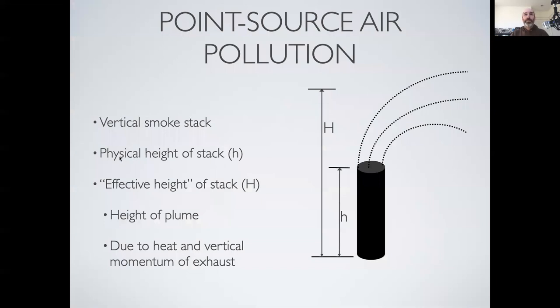The other notable thing about the Gaussian plume is it has this idea of an emissions height. It combines both the height of the smokestack itself, the physical height lowercase h, and the effective stack height capital H. The physical height is the actual height of the emissions, while capital H is the effective height the plume reaches after steady state.